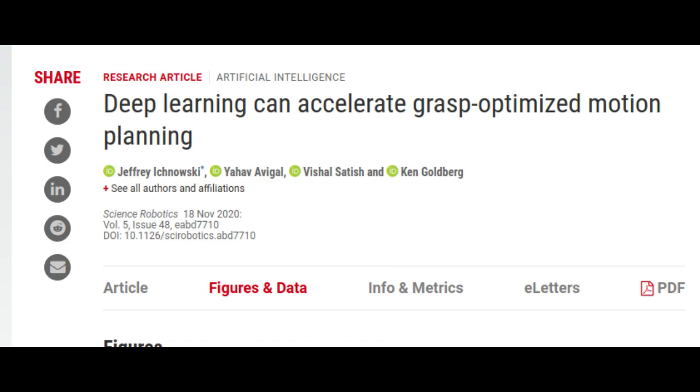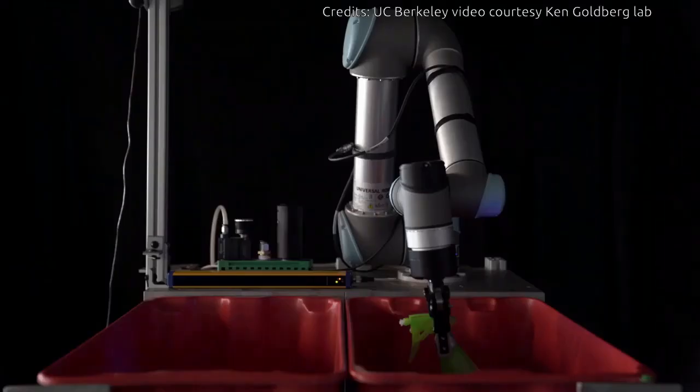Researchers at the University of California, Berkeley, have created new artificial intelligence software that gives robots the speed and skill to grasp and smoothly move objects, making it feasible for them to soon assist humans in warehouse environments.